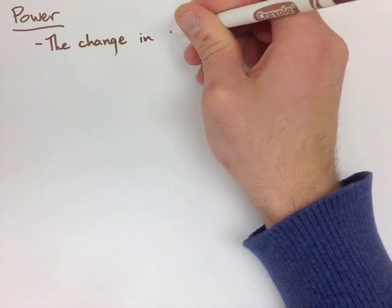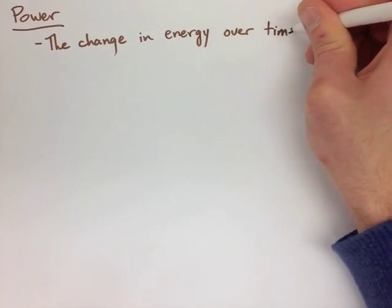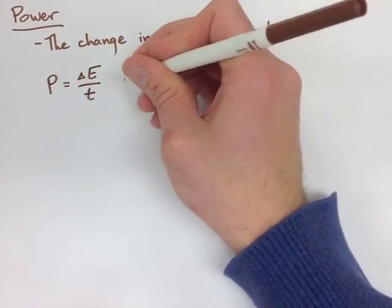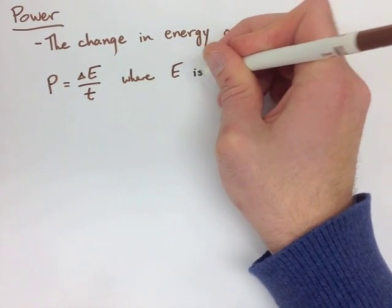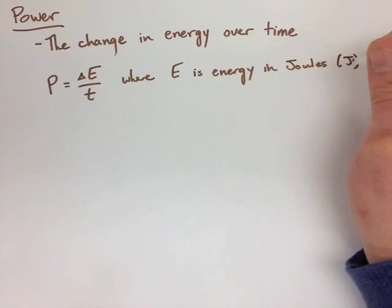So the formula for power is actually very easy. What we have is P equals delta E over T, where P is power, and power is measured in joules per second or watts. E is energy in joules, and T is time in seconds.